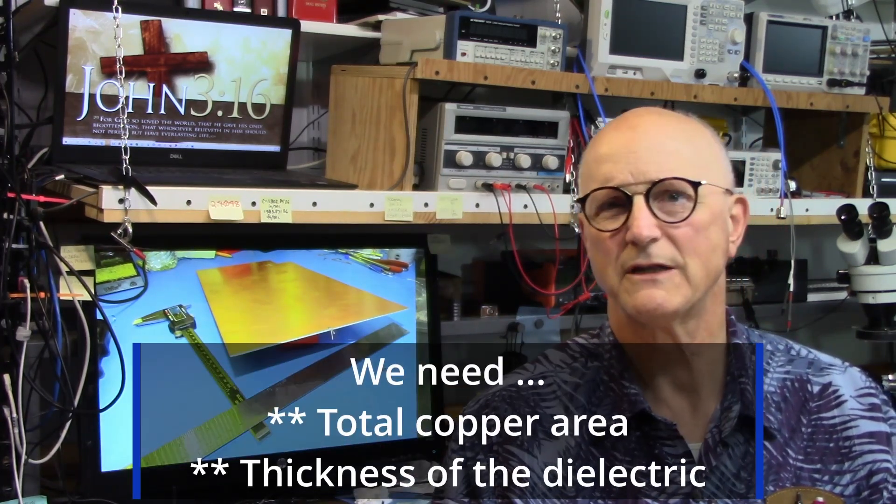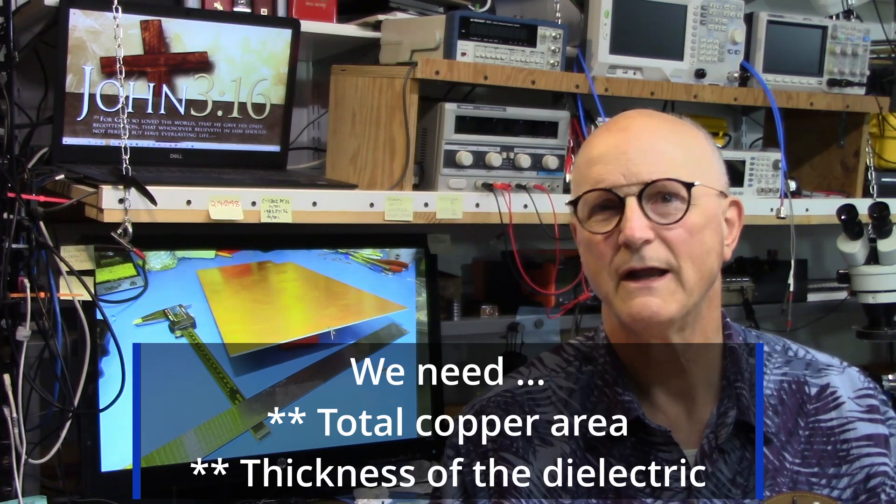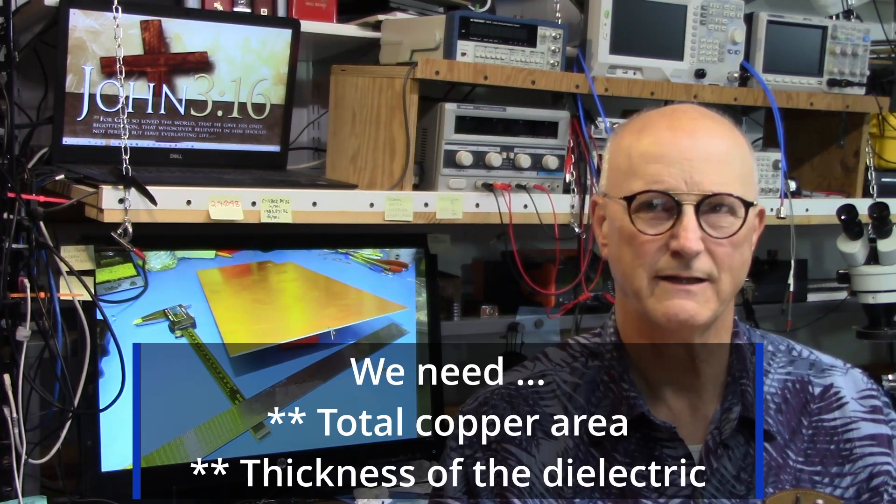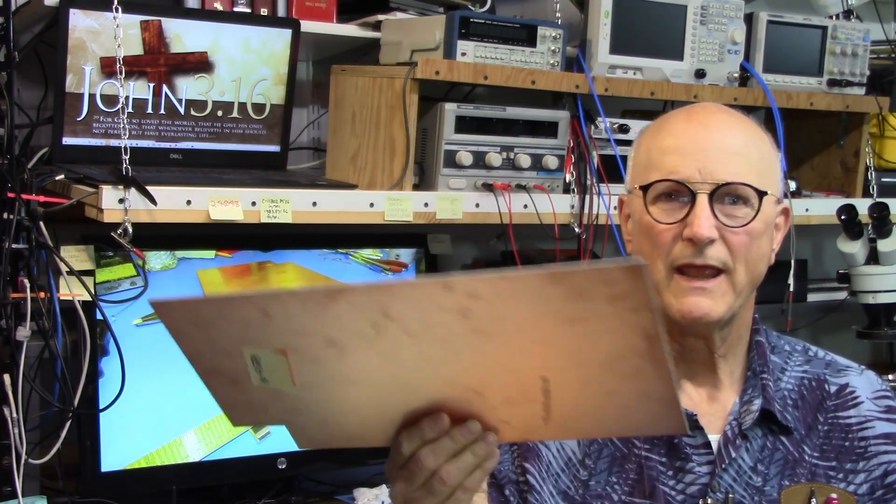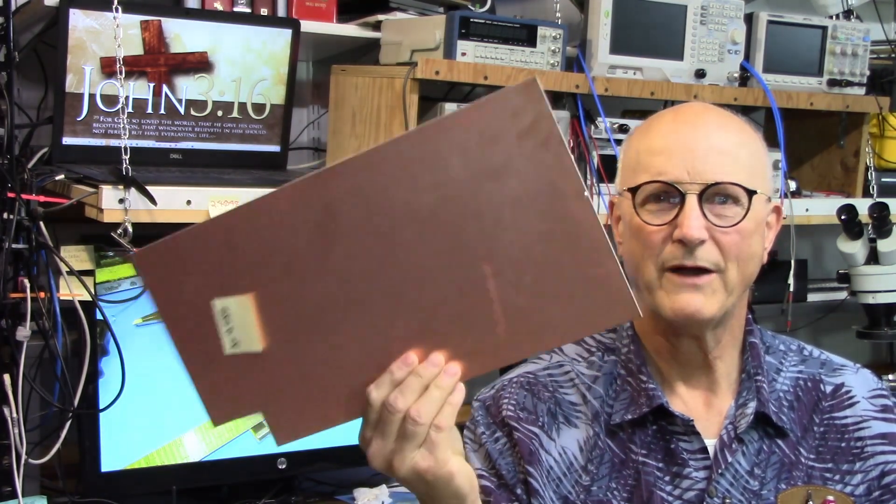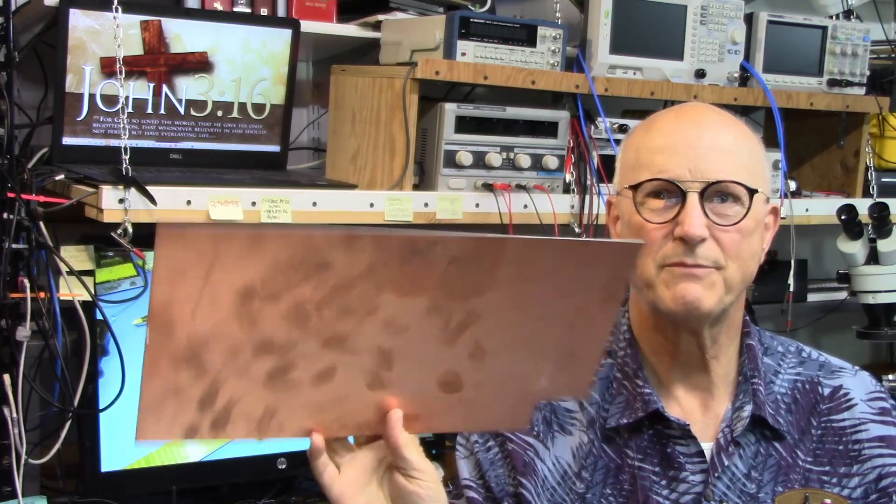In order to determine the dielectric coefficient of your PCB material, it starts by carefully measuring the material dimensions in three-dimensional space. We need to be able to calculate the total area of the copper and the thickness of the dielectric material. So let's go to the bench and start measuring my representative piece of PCB material.